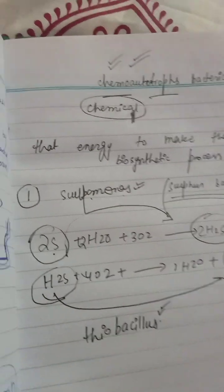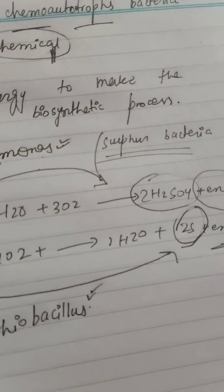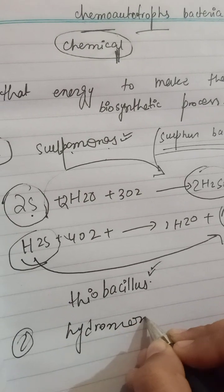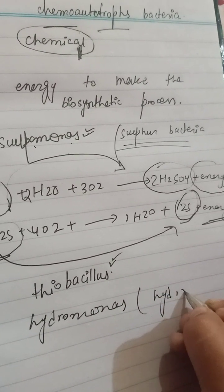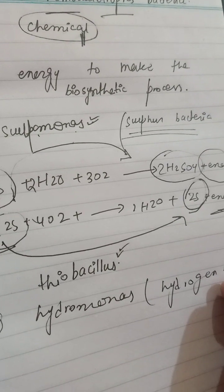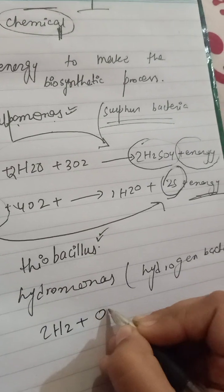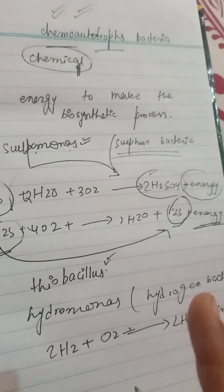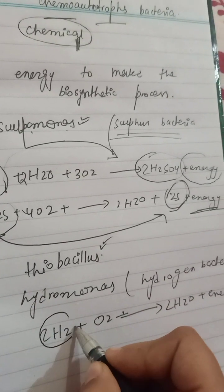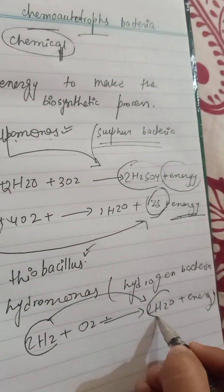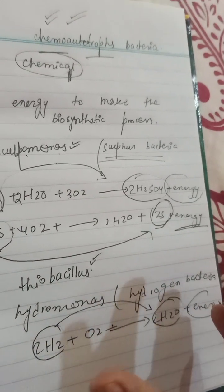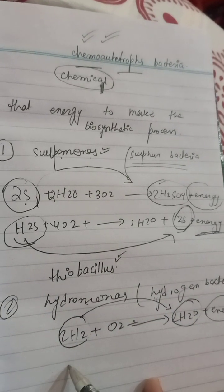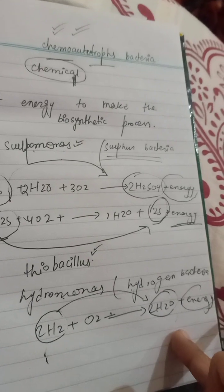The second type is Hydromonas — the hydrogen bacteria. They oxidize molecular hydrogen into water, and the energy released is used to make their food. So Hydromonas are hydrogen bacteria that basically oxidize hydrogen, and the energy released is used for biosynthesis.